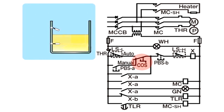If C-O-S is set to auto mode, X is excited and returns to sequence operation. With X-A turned on, current begins to flow from X-A to P-B-S-B, L-S-H, and to X, enabling X to remain excited. By repeating this operation, the level in the tank is controlled within the preset parameters. However, if C-O-S remains in manual mode, the pump does not operate because X is not excited even though the L-S-L relay is turned on. The tank eventually becomes empty.